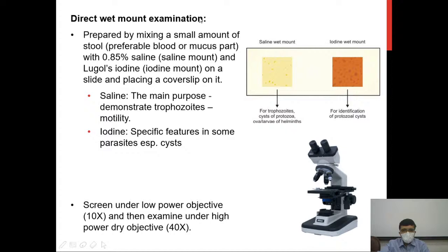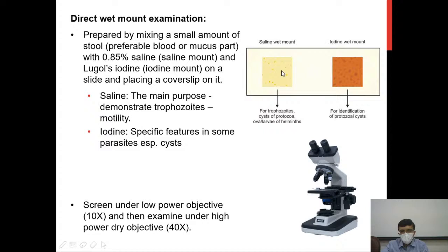For direct wet mount, a small amount of stool — preferably the blood or mucus-containing part — is mixed with saline, and separately with Dobell's iodine. The saline mount does not interfere with anything in the stool, so it is most useful when looking for motility of trophozoites. Iodine kills trophozoites so they lose motility, but iodine gives contrast — imparting refractility and staining to nuclear components and internal structures within cysts, aiding diagnosis.